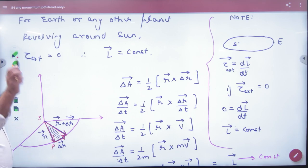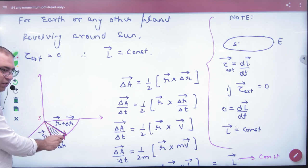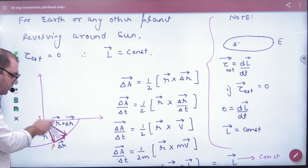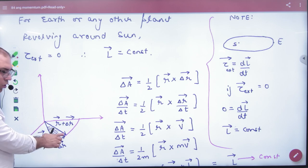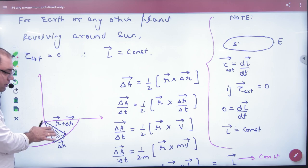According to the triangle law of addition, one vector, the second vector, closing vector. What is r-vector plus delta r-vector? This vector and this vector is almost 90 degrees. This is almost tangent. So what is the area? Half into base into height.